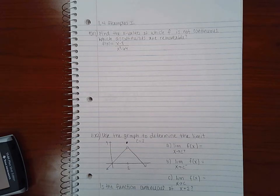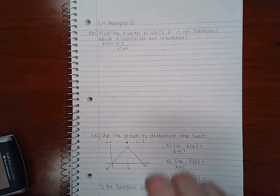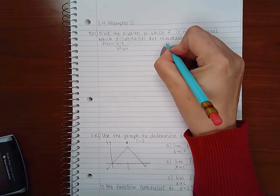In this video we will cover section 1.4 and the first few examples, so this is examples part one. Example one says finding x values at which f is not continuous, which discontinuities are removable. So we need, if we're trying to find out where it's not continuous, then we need to find two things.